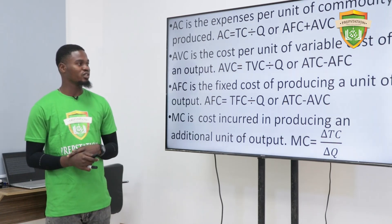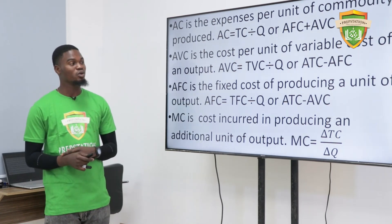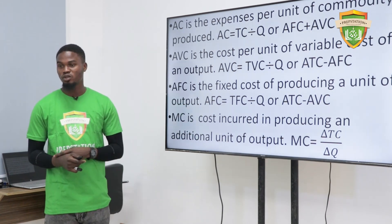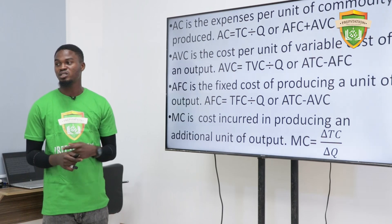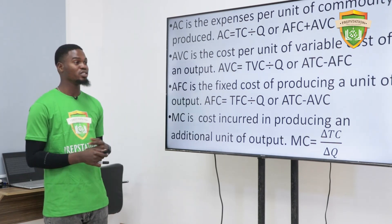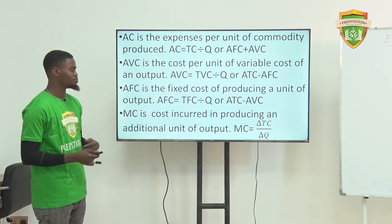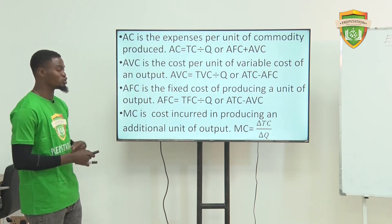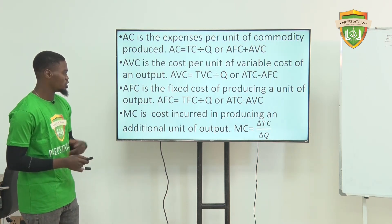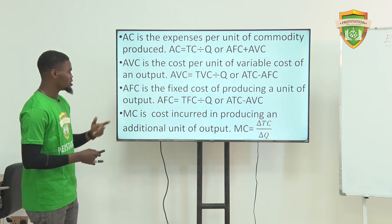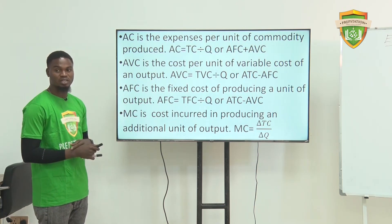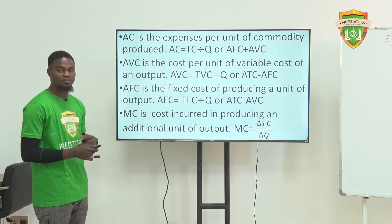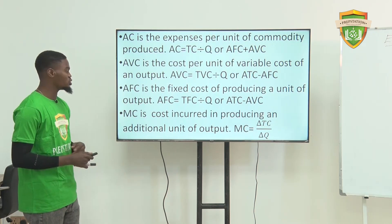You can get your average variable cost by dividing total variable cost by quantity, or by subtracting average variable cost from average total cost. Average total cost is the same thing as average cost. Then you have average fixed cost, which is the fixed cost of producing a unit of output, gotten by dividing total fixed cost by quantity, or by subtracting average variable cost from average total cost.